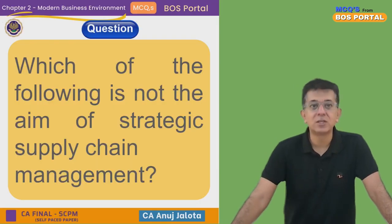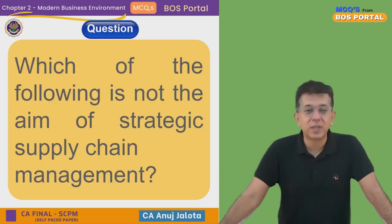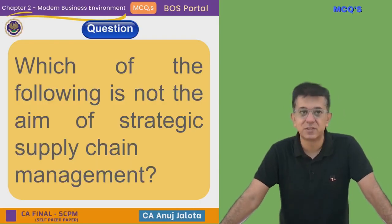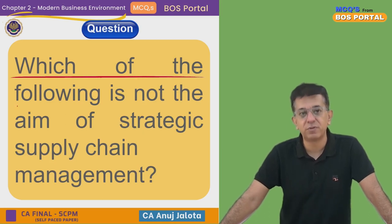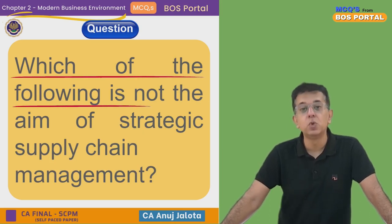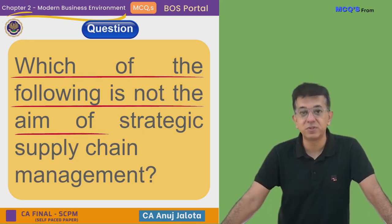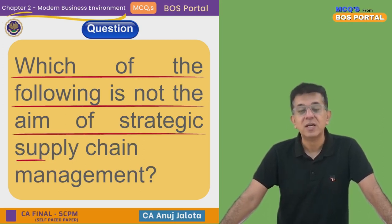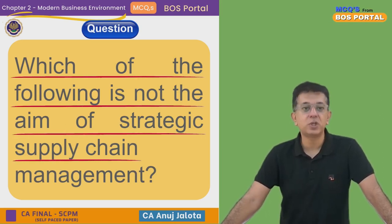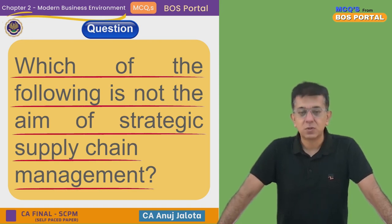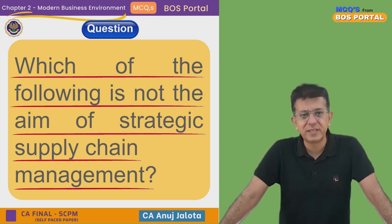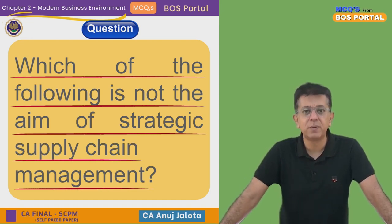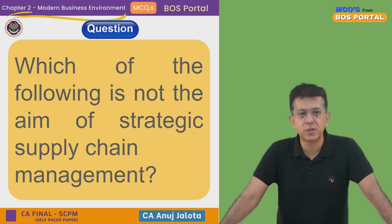We are on to Chapter Number 2, that is Modern Business Environment. The question for today is: which one of the following is NOT the aim of strategic supply chain management? We will see what supply chain management is in just a while — bring up the four options please.